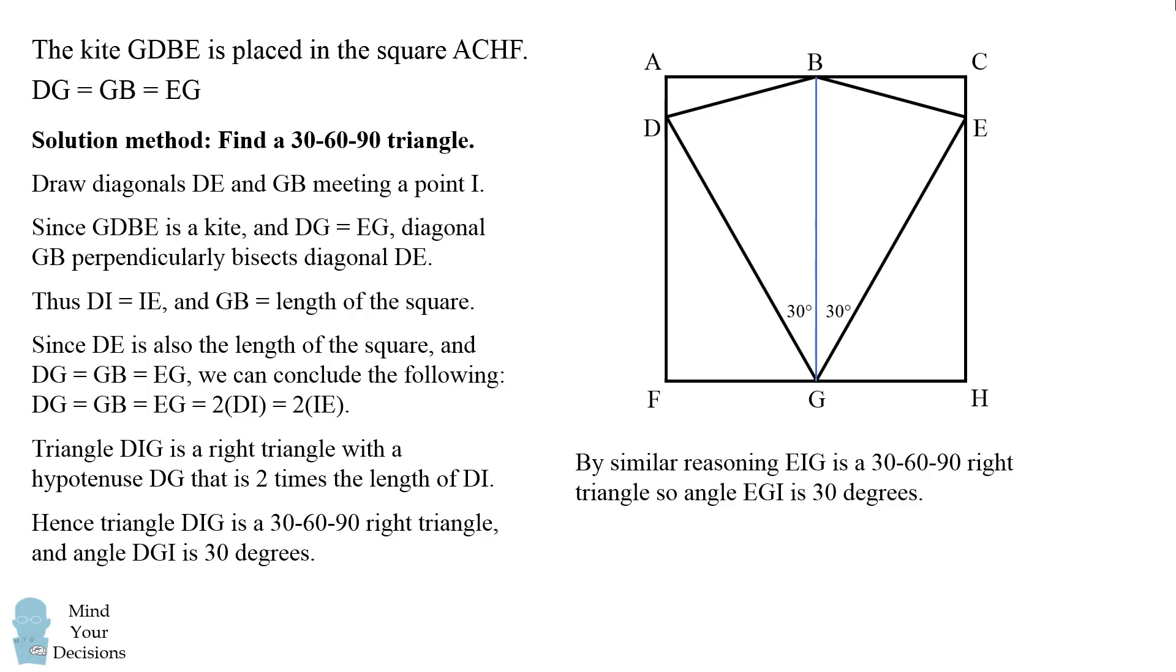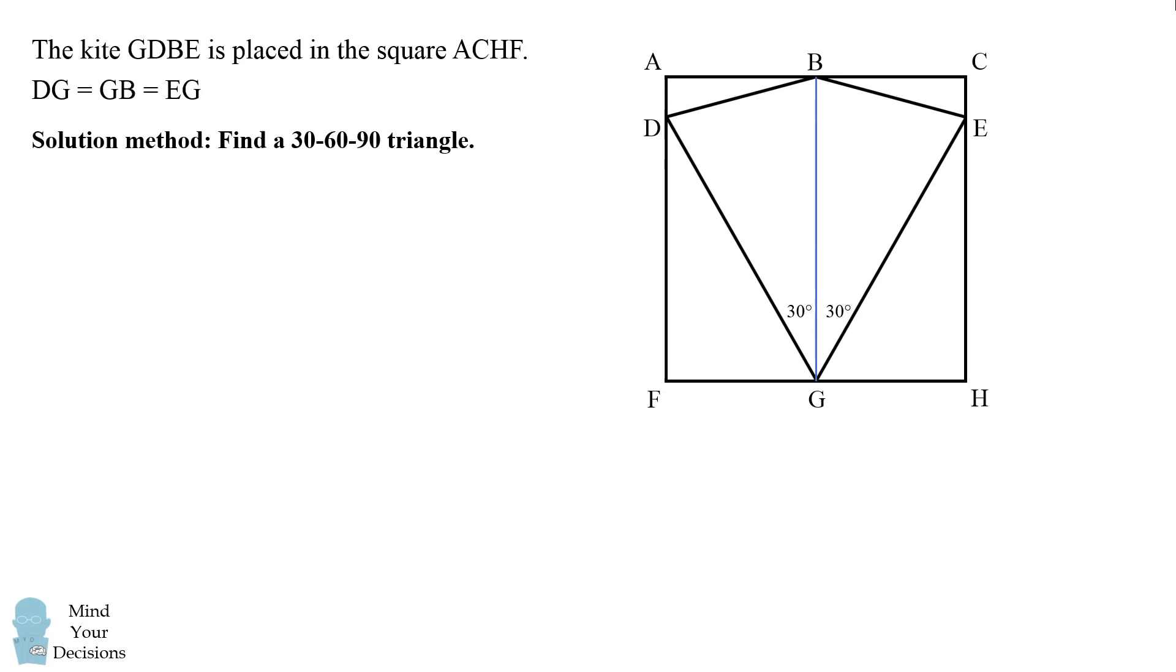So we're almost there to be able to calculate the size of X. The vertical diagonal splits the kite into two congruent isosceles triangles. This is because we have side angle side. DG is equal to GB is equal to GE, and the angle between those sides is equal at 30 degrees.